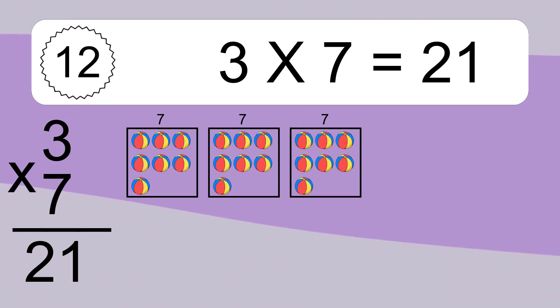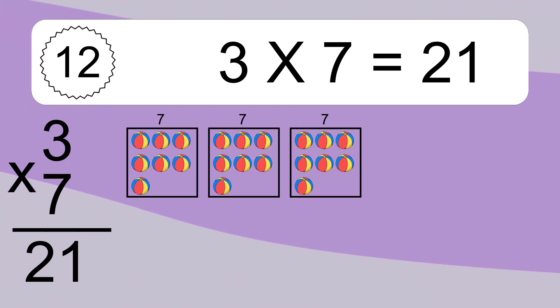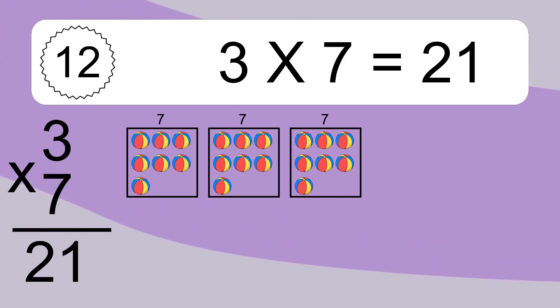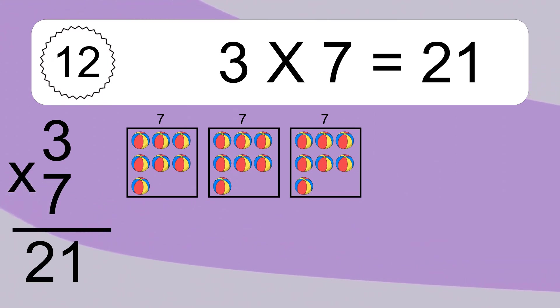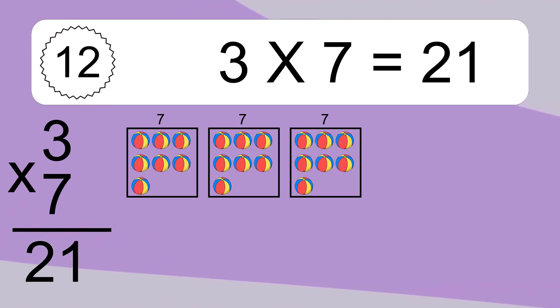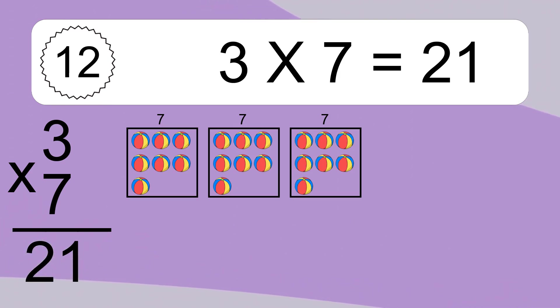We have 3 boxes, and each box has 7 colorful balls inside. If you count all the balls in all the boxes together, you will have 3 times 7 balls. This equals 21 balls.